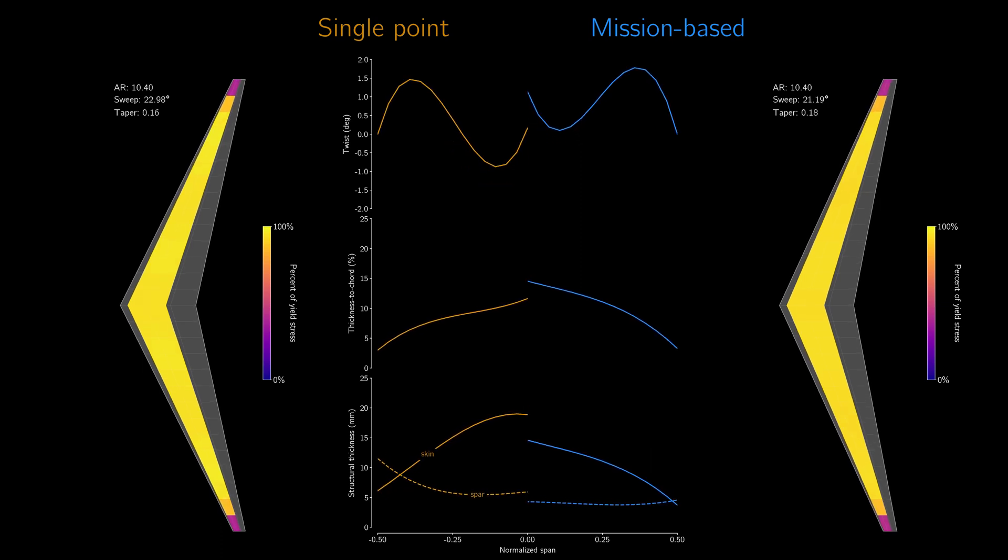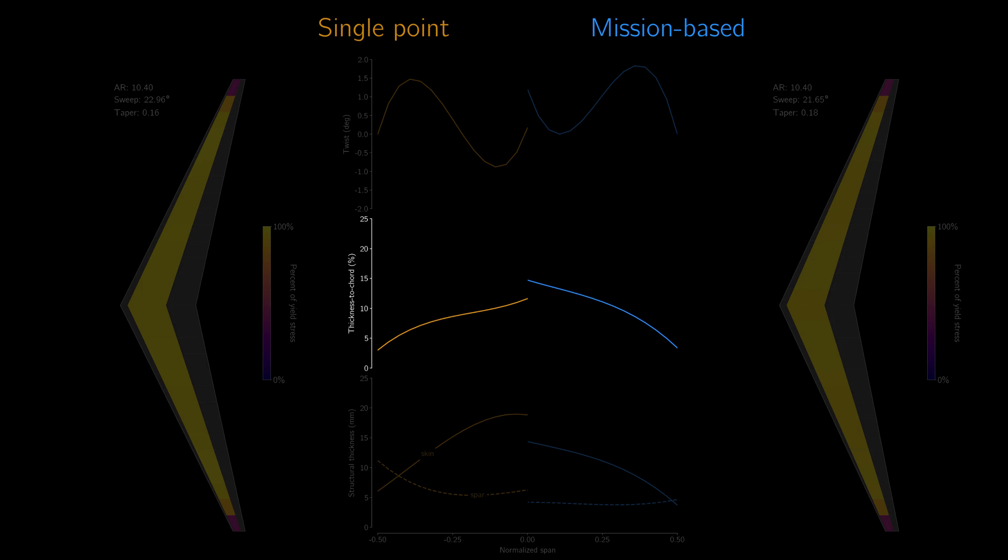Thus, it is in the optimizer's interest to reduce the weight of the wing even at the cost of worse high speed performance. It does this with a higher thickness to chord ratio and less sweep. Both enable a thinner skin and thinner spar, which means a lighter wing.